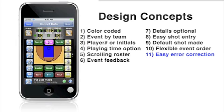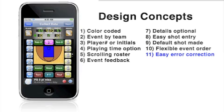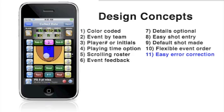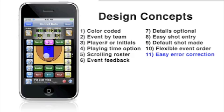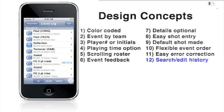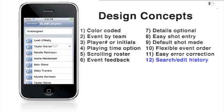I can also bring up the last event — in this case for a shot — and make a decision on how to edit it. I can also change the player for any event. If I need to change an event that happened earlier in the game, I can use the event log to locate the event and make the change.